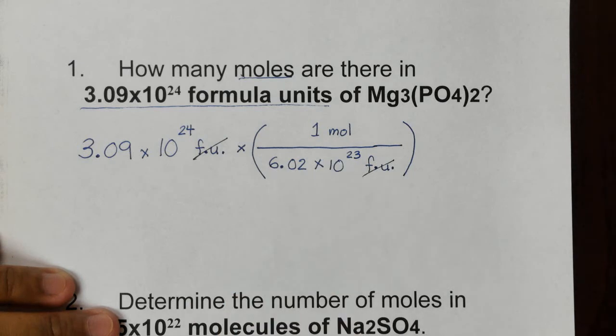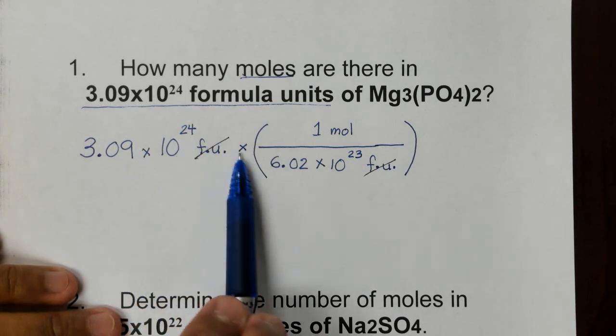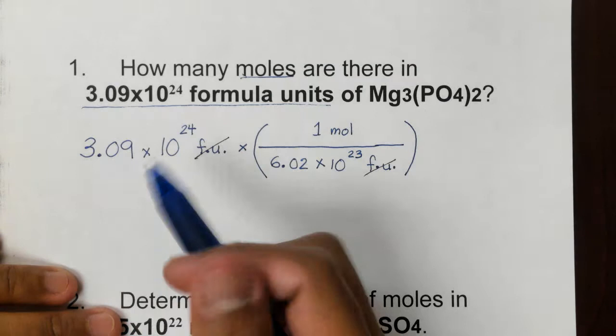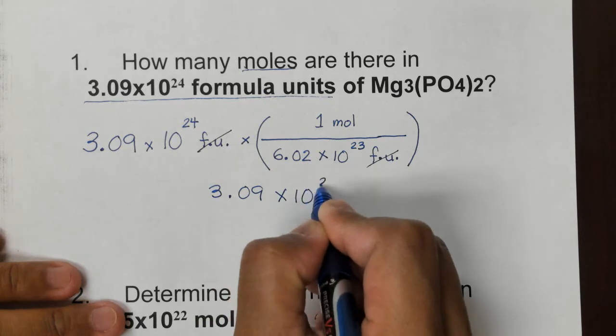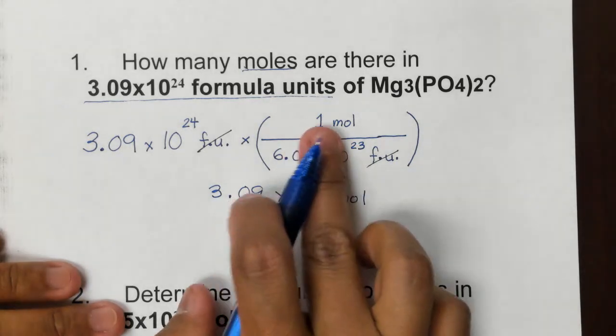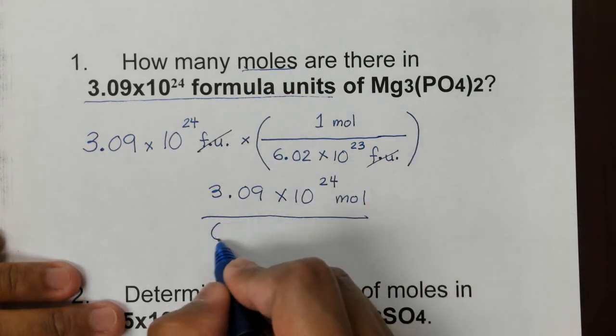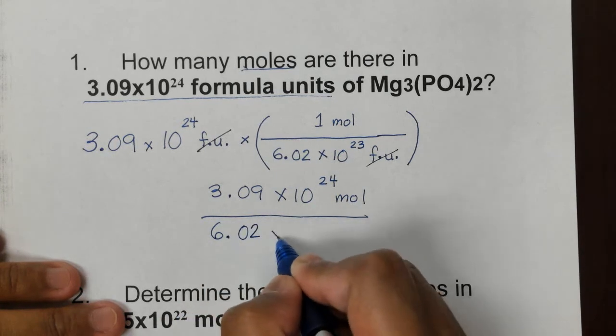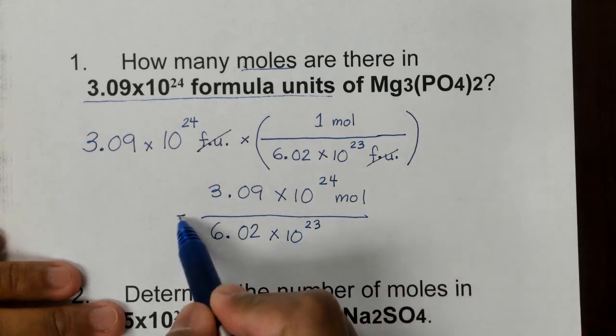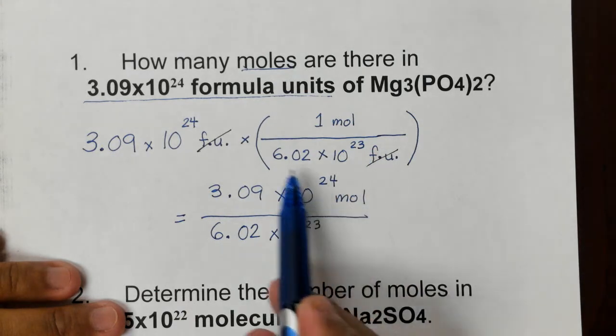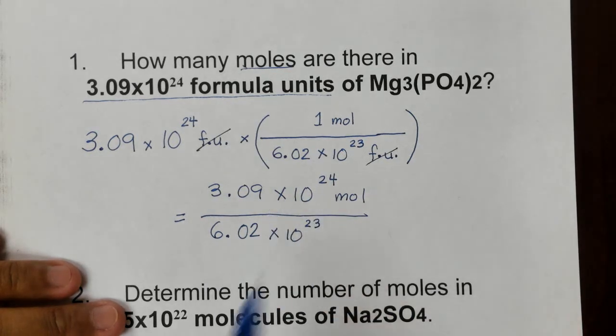And so we're left with mole. This time we can shorten this out as 3.09 times 10 to the 24 times 1, which is the same thing. So we can shorten this out as 3.09 times 10 to the 24 mole already, because that's times 1 mole, then over 6.02 times 10 to the 23. And there's no more unit because we canceled it out.